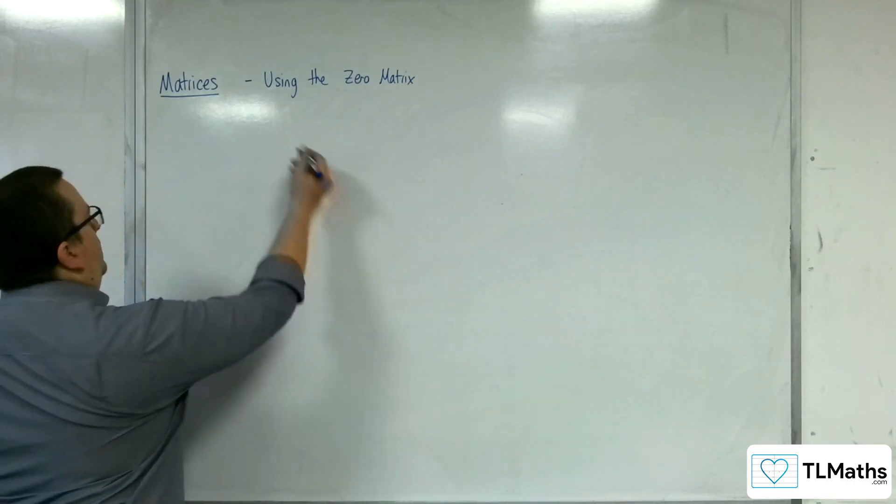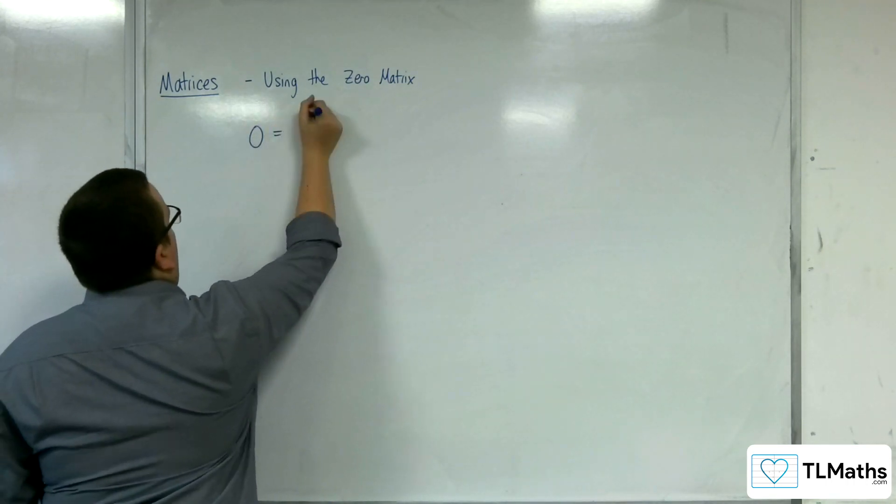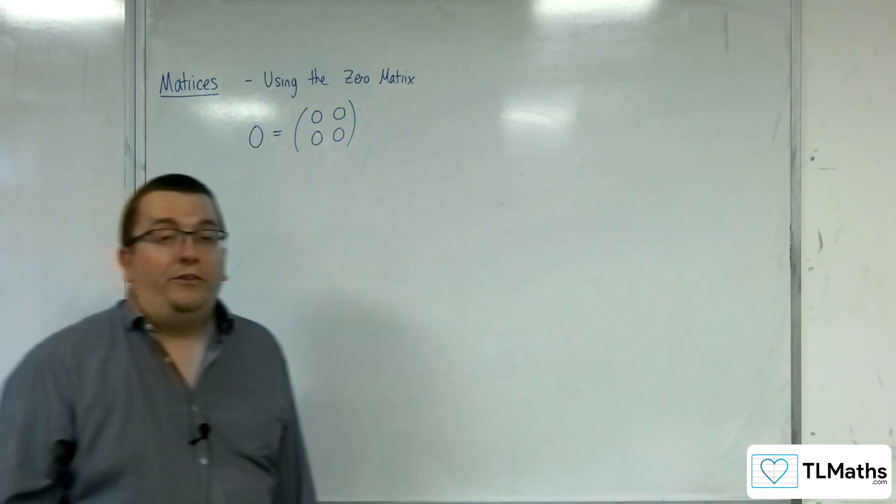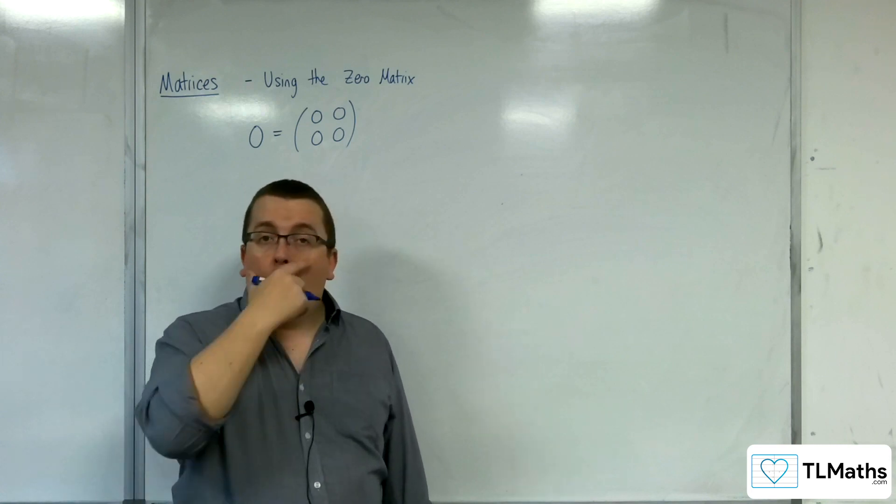in two by two matrix, we'll be representing it as zero, zero, zero, zero, and that's it, okay? I mean, what does it do? Not a whole lot.